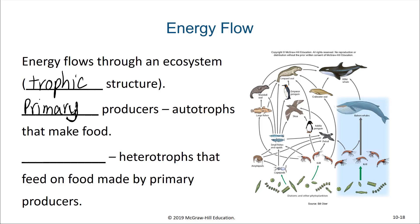There will often be one to many levels of consumers. These are heterotrophs that feed on food that was made by the primary producers. They can either feed directly on the primary producers or they can feed on animals that feed on the primary producers. There can be many steps in a food web.